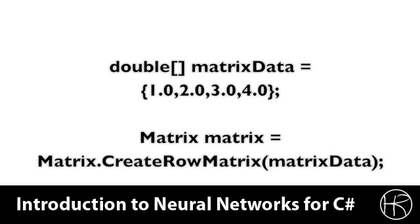Then the createRowMatrix, which is a static function of the matrix class, is called, that creates a matrix that contains a single row, but has enough columns to hold all of the numbers that you see above. This matrix can then be used just like any other matrix. A row or a column matrix is not a specific type. It is just a matrix that has that number.